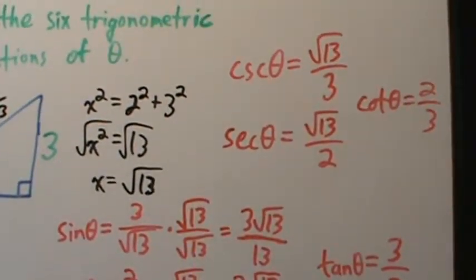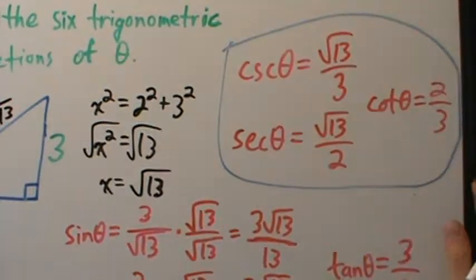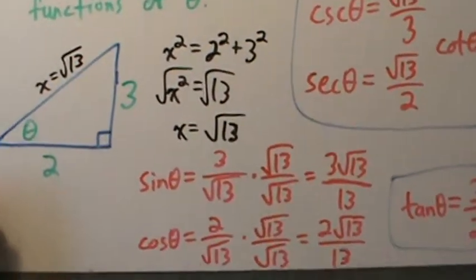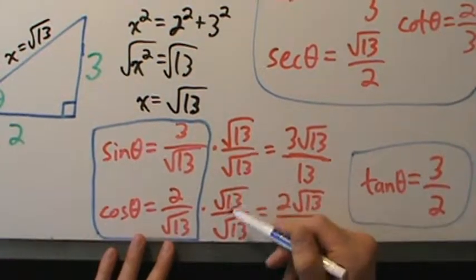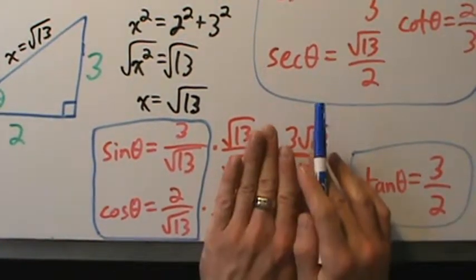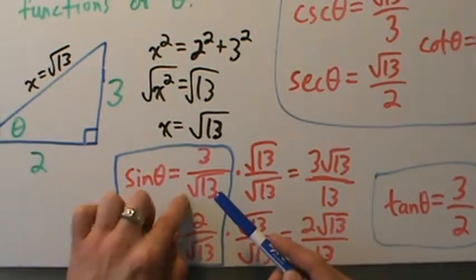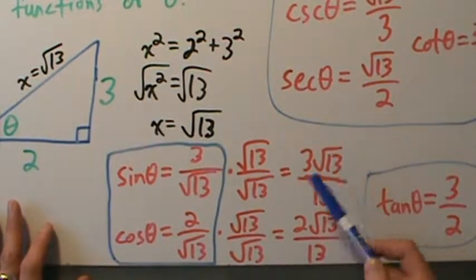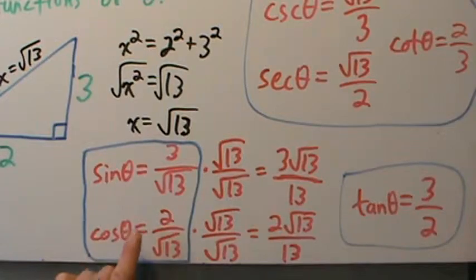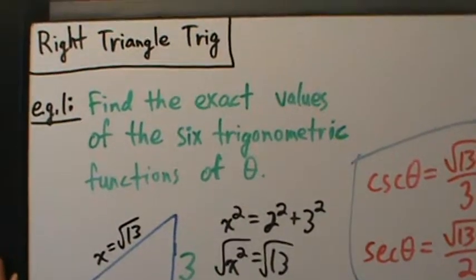So that's example 1 — those are the six trig function values for angle theta. Also, 'find the exact value' means leave everything in terms of square roots; don't approximate with a decimal, because the square root of 13 is irrational and can't be expressed exactly as a decimal. Just remember to use the Pythagorean theorem to find the missing side, then apply the definitions: sine is opposite over hypotenuse, cosine is adjacent over hypotenuse, and so on.